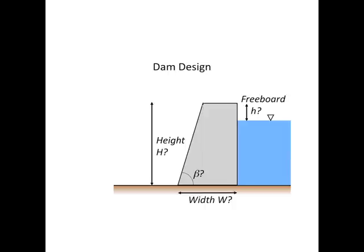Here's a cross-section through this gravity dam — the water's to the right. The dam has a sloping front face at some angle beta, a total height of H, and a total width of W at the base. We leave a bit of freeboard — that's little h — on the right-hand side, to make sure that if there's any wave action in the impounded reservoir water, it doesn't overtop the dam.